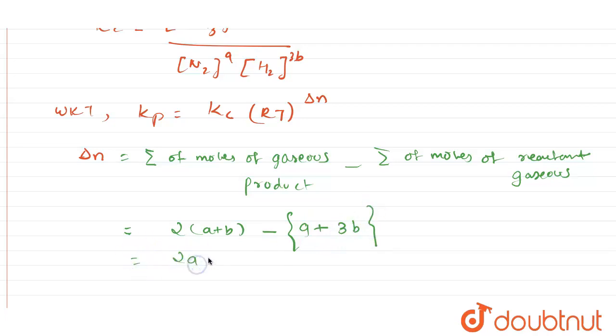When you do this, it is going to be 2A plus 2B minus A minus 3B. So this will be equal to A minus B. So delta N value is A minus B.